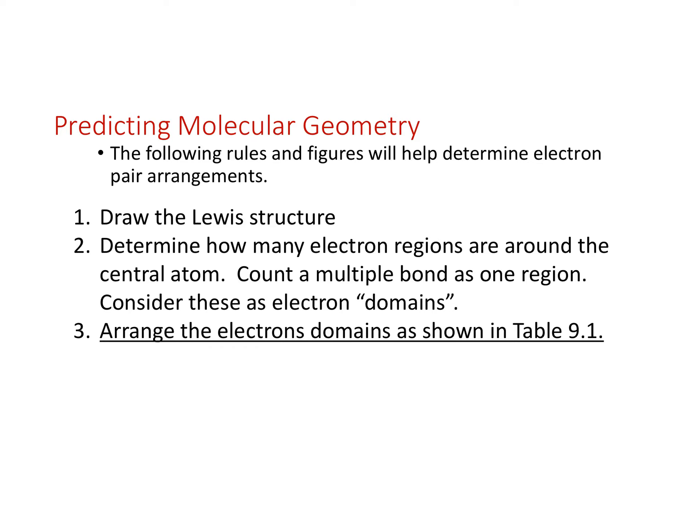The steps are: first, draw the Lewis structure. Then determine how many electron regions — domains — are around the central atom. We want those electrons to be as far apart as possible while still attached to that central atom, and we'll arrange them into one of five geometry categories.